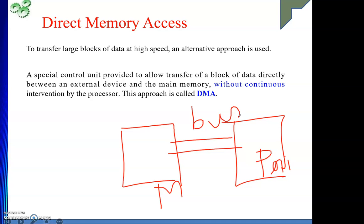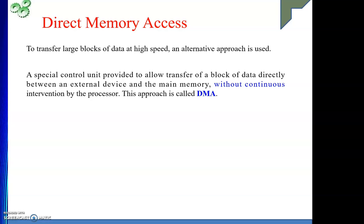In the DMA technique, we do not want the processor to bear this burden. The job here is simply to transfer data between memory and the peripheral. So we remove the processor from this entire path. Since the bus is controlled by the processor, someone else must act on behalf of the processor — and that someone is the DMA controller.